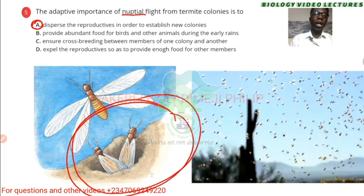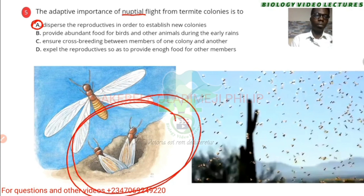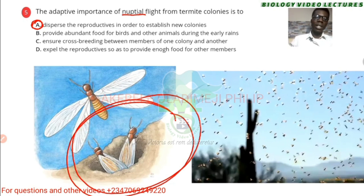It says to expel the colonies so as to provide enough food. Yes, to provide enough food — but not just to provide enough food for many people there, but to actually establish and disperse their population. The answer is A.